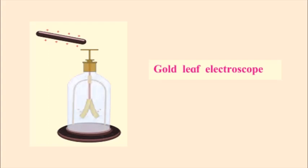The gold leaf electroscope is a simple device to detect electric charge on an object. It consists of a copper rod with a metal disc at the top and two gold leaves at the bottom, placed in a bottle so the disc is above the bottle. When we take an uncharged object near the disc, the leaves remain closed. But when we take a charged object near the disc, both leaves are charged with the same electric charge and repel each other. When we touch the disc with our hand, the leaves collapse because the charge flows into the earth through our body and the leaves get discharged.